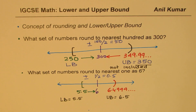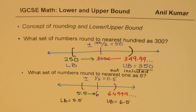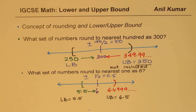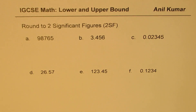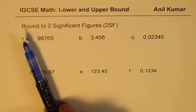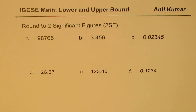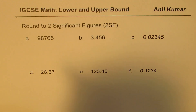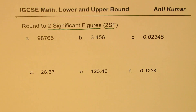So the link between rounding and upper and lower bound should now be absolutely clear. Let's move on and take some rounding examples. As an exercise, we'll look at rounding to two significant figures. This term — two significant figures, written in short as 2SF — is also new for many of our subscribers.